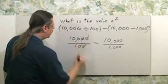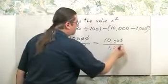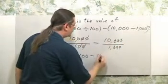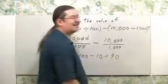So this just gives you 100 over 1, which is 100. Do the same thing over here. It just gives you 10 over 1, which is 10. 100 minus 10 is 90.